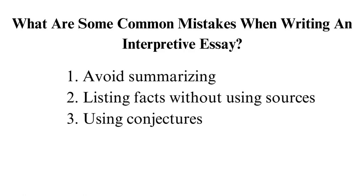2. Listing Facts Without Using Sources. Simply listing facts is not sufficient. You need to use supporting sources to explain your point of view. You may use the original reading or external sources. Certain citation styles may allow you to list the page number you extracted the information from, making it easier to refer to the content. 3. Using Conjectures. A conjecture refers to an opinion that is based on incomplete information, much like an assumption. It is not convincing, hence writers should avoid making claims with no proof. As such, each of your opinions should be backed up with evidence that proves your claims.